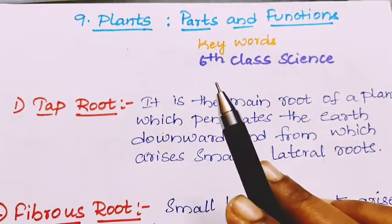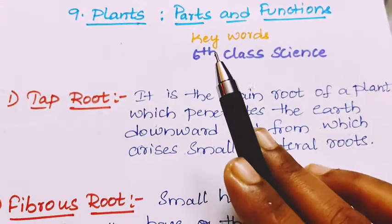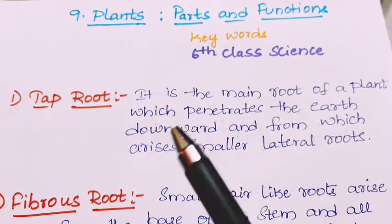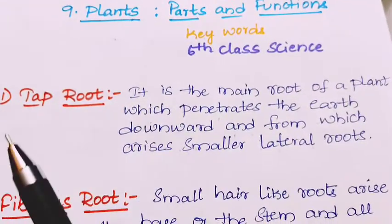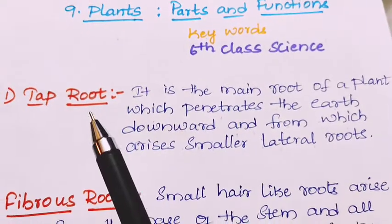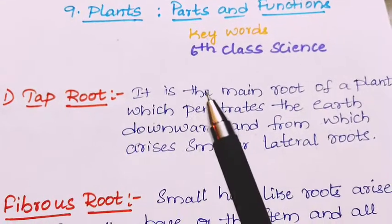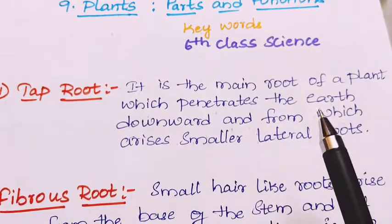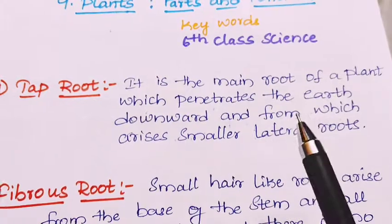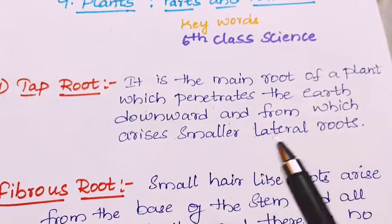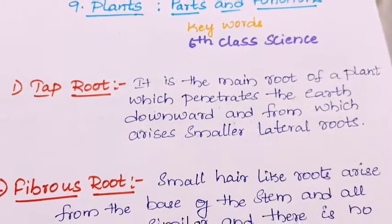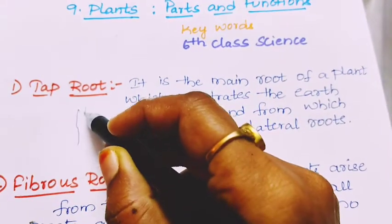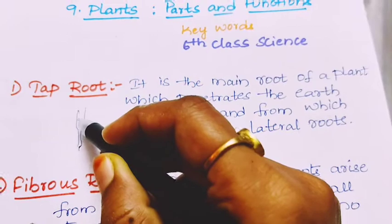Hello students, today we will discuss the keywords for the lesson 'Plant Parts and Their Functions.' The first keyword is taproot. A taproot is the main root of a plant which penetrates the earth downward, and from which small lateral roots arise.